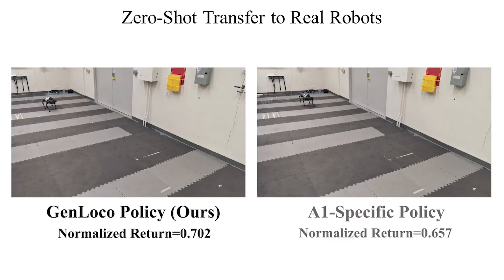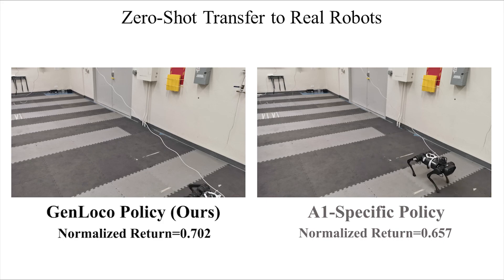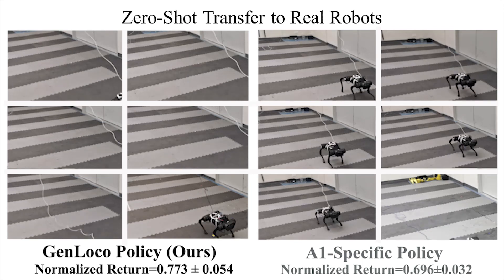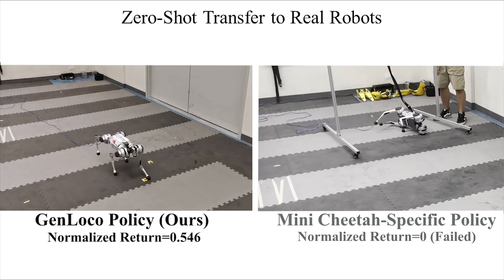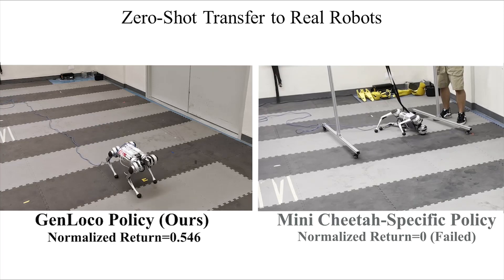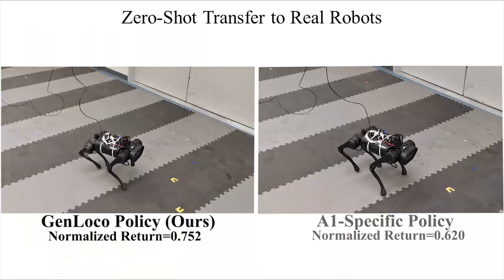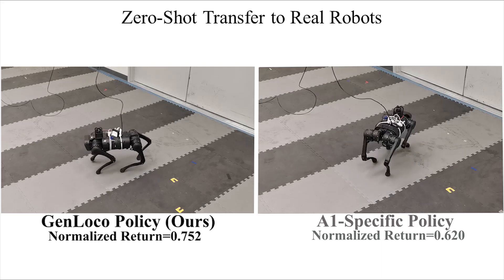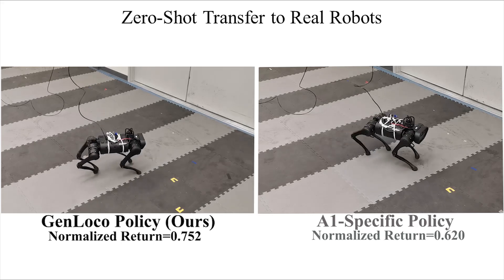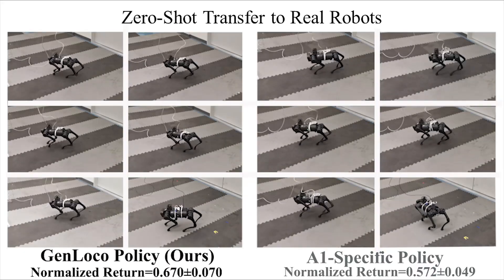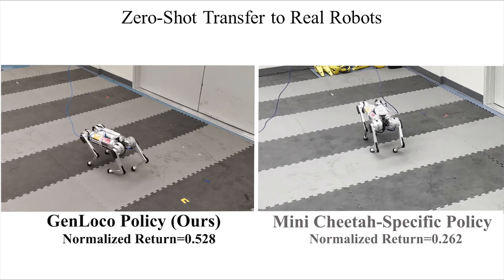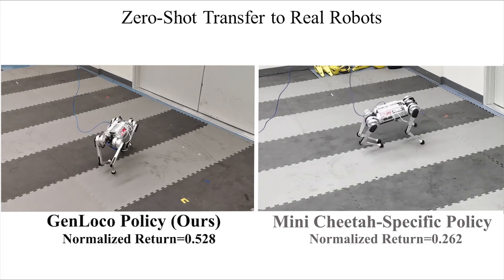We further compare the real-world performance of our policies to policies trained specifically for the A1 and Mini Cheetah. The real-world experiments over six repetitions demonstrate the consistency of our model. Training with the morphology generator yields a more robust policy and reduces the need for additional fine-tuning or adaptation. We note that the performance of our policies, which work on both robots and were trained on neither, is overall better than the policies trained for specific robots.